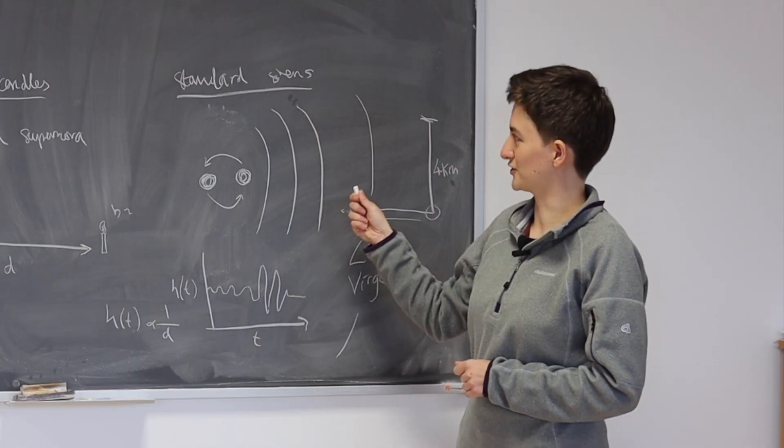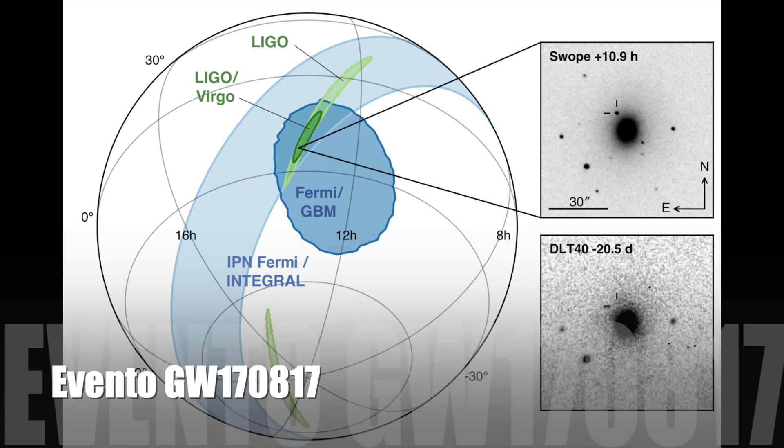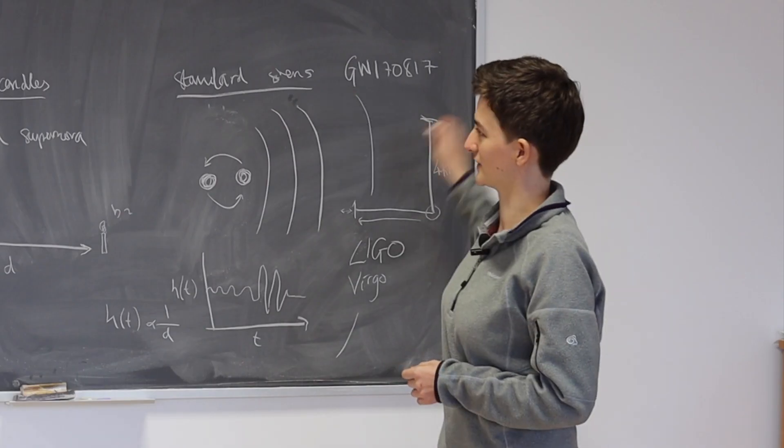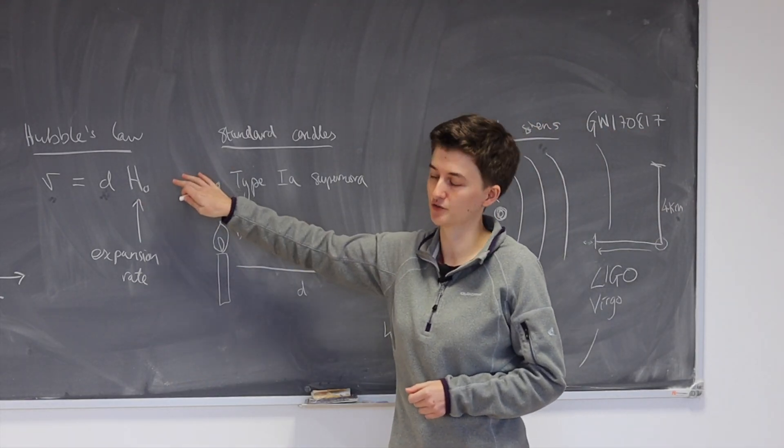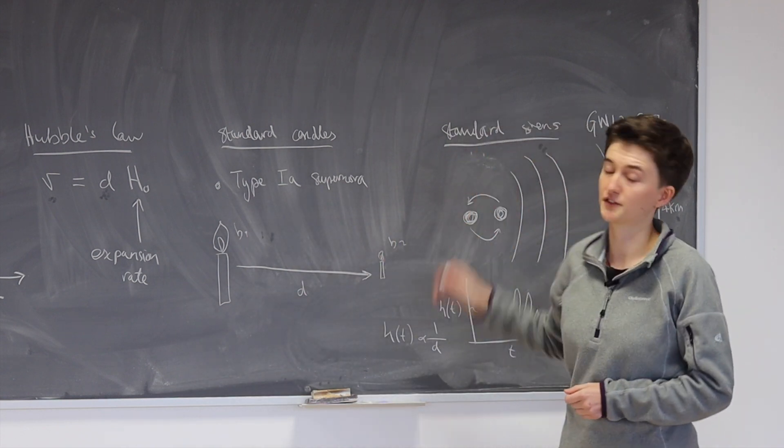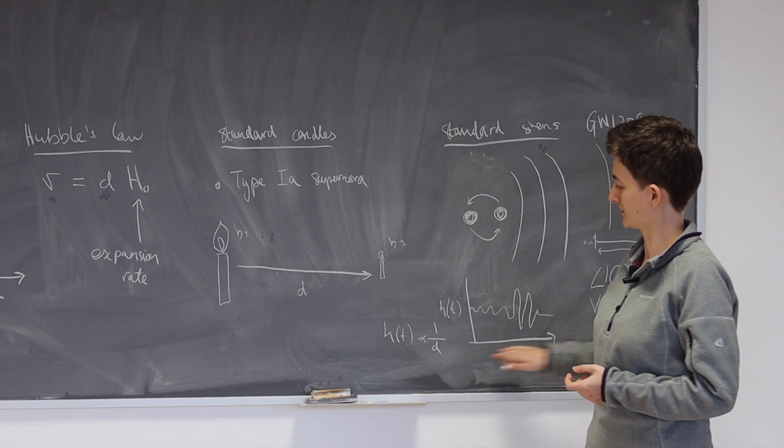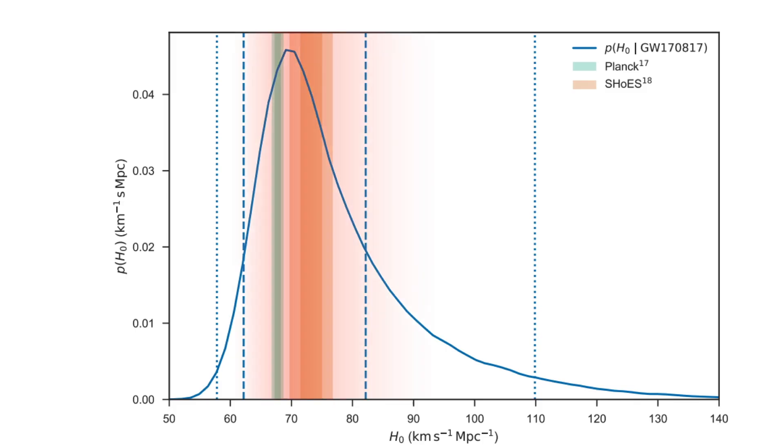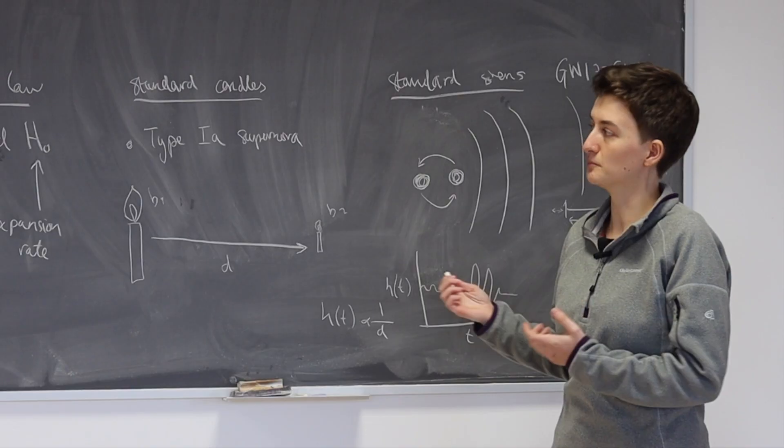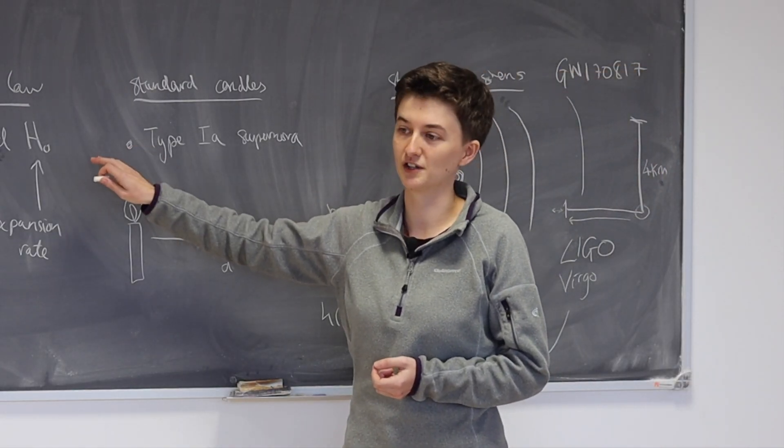So we've only measured one of these events ever so far, and that was called GW170817, a very catchy name, it's named after the date that it was discovered on. And so consequently we don't have a particularly good measurement of H0 yet from this standard siren technique, because with just one there's a lot of uncertainty about the waveform, the shape, and this conversion to the distance. So it has very big error bars. So at the moment, the standard sirens can't say much about the H0 tension,